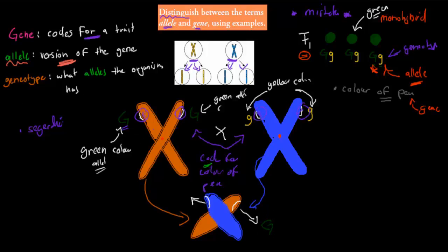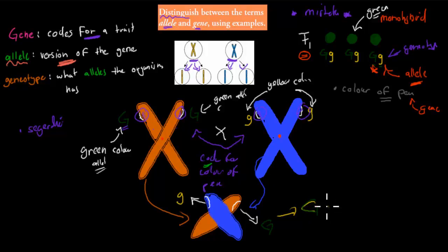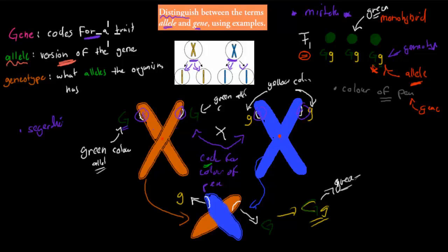Because it comes from the father, and this allele of the actual gene is the small g. Overall, this plant would have a genotype consisting of a capital G — green colour — and a small g — yellow colour. So with this genotype, these different alleles, its phenotype would be green because big G is dominant over small g.